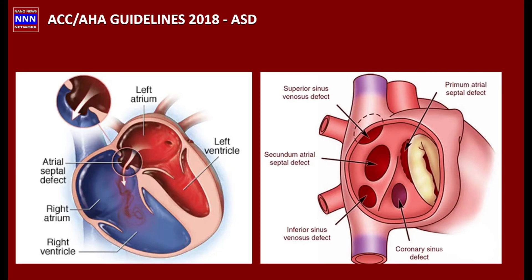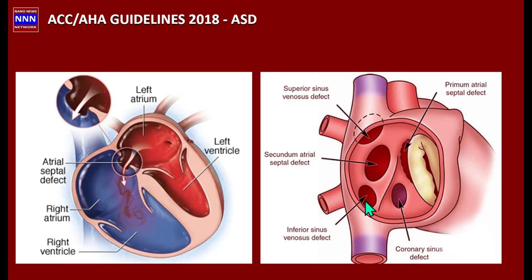Before I get into the guidelines flowchart, I want to give a basic concept of what we are talking about. The atrial septal defect is a hole between the left and right atria through the interatrial septum. The most common type is the secundum type, located in the middle of the atrial septum. If it is close to the superior vena cava, it is called the superior sinus venosus defect. Similarly, we have the inferior sinus venosus defect and the coronary sinus defect.